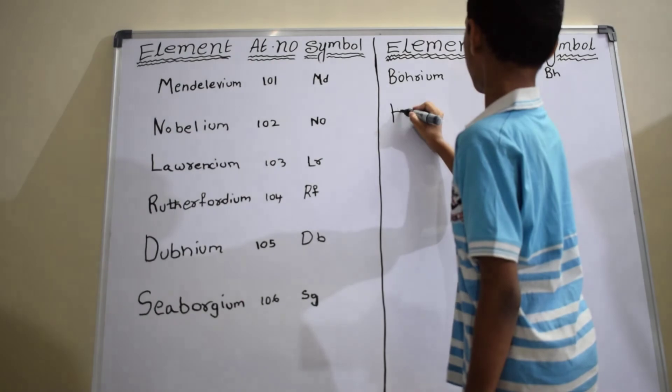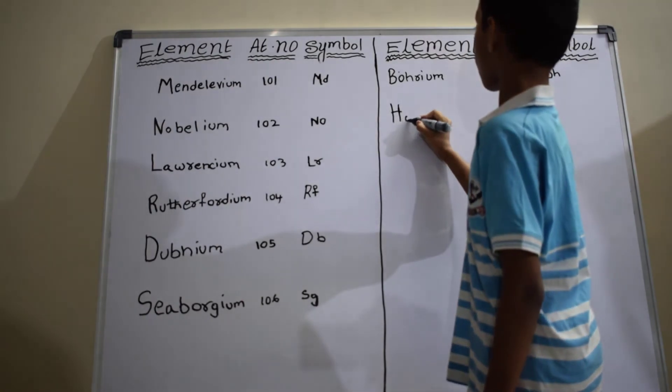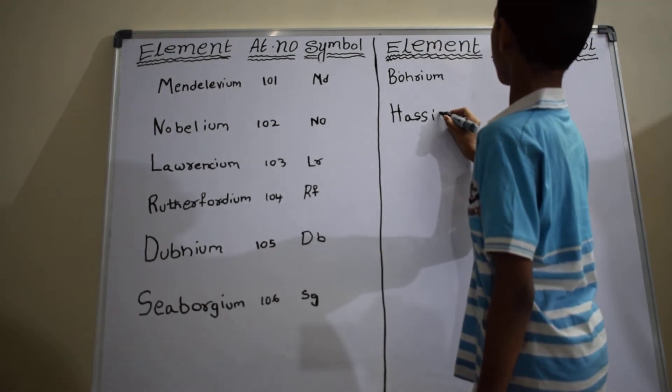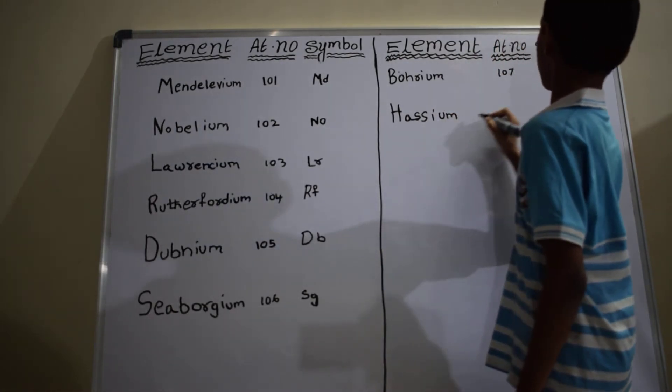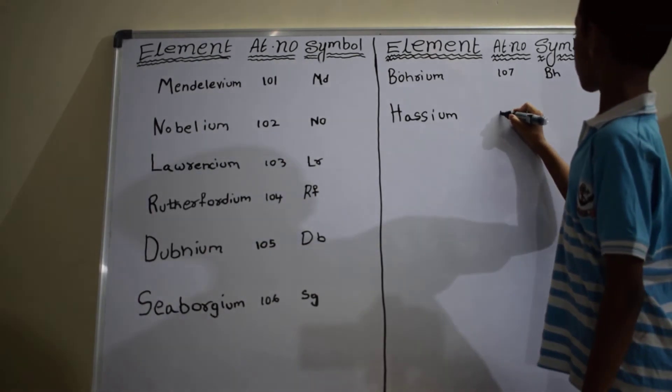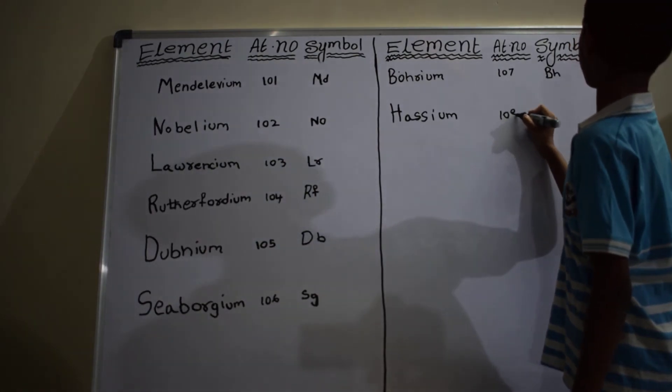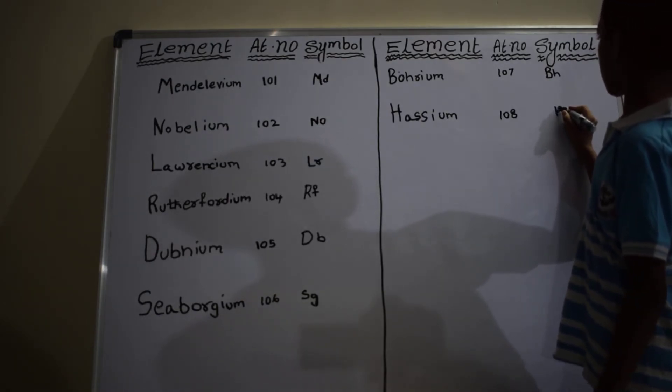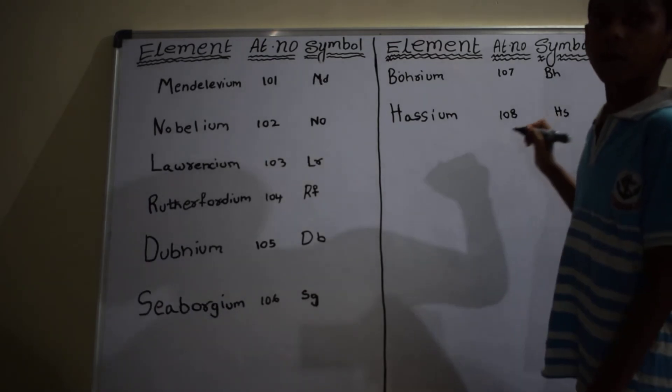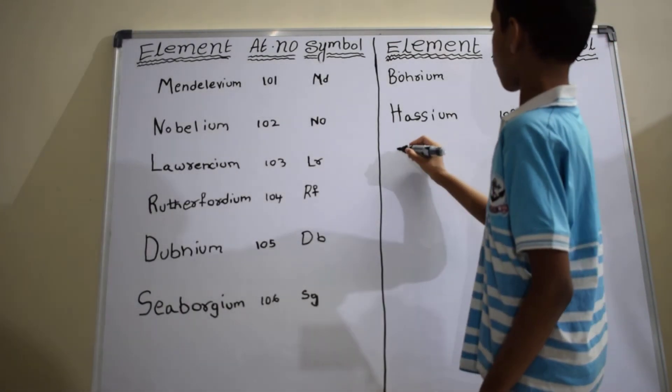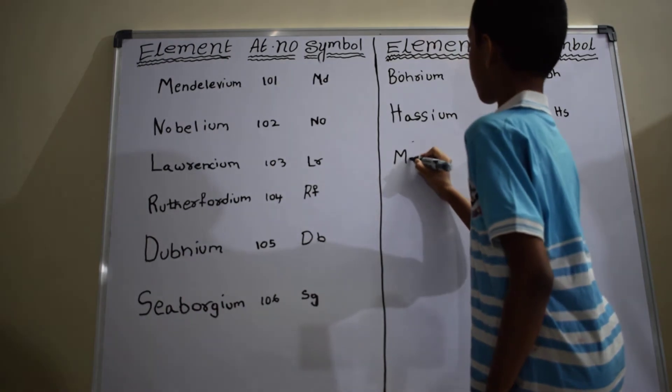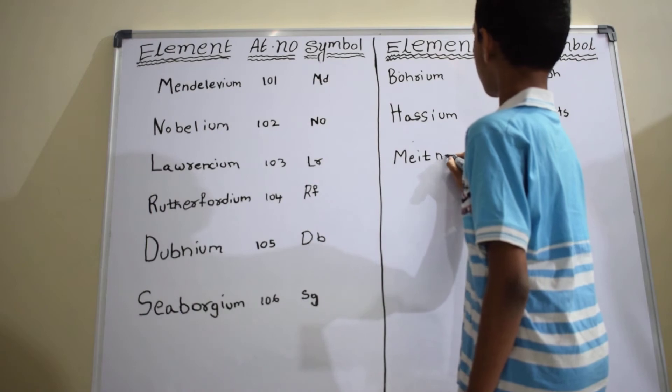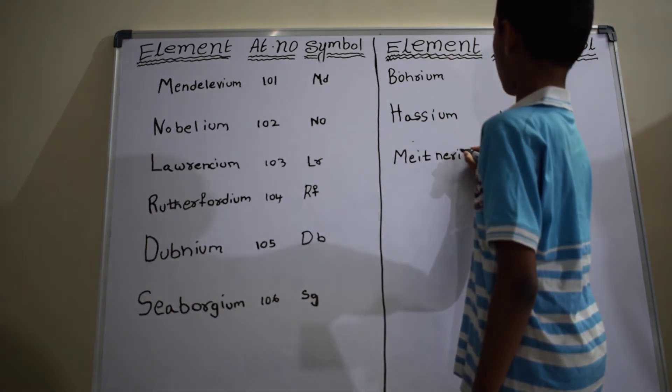Hassium. Atomic number is 108. Symbol is Hs.